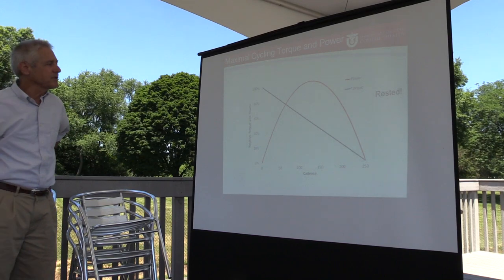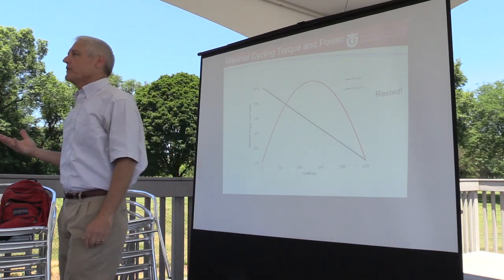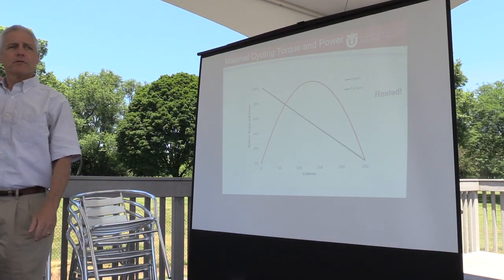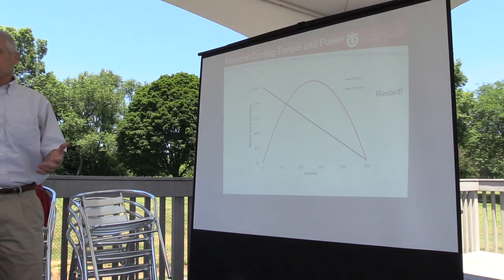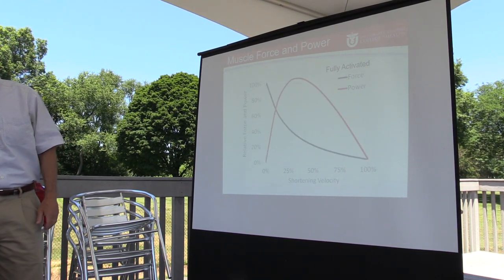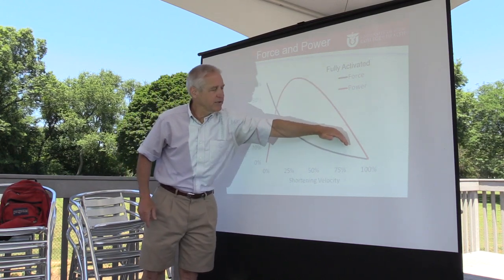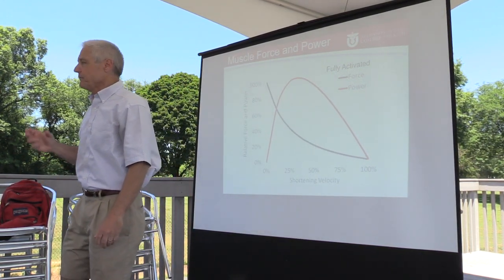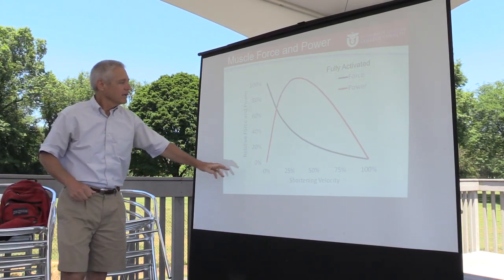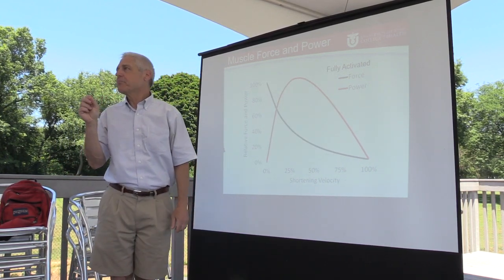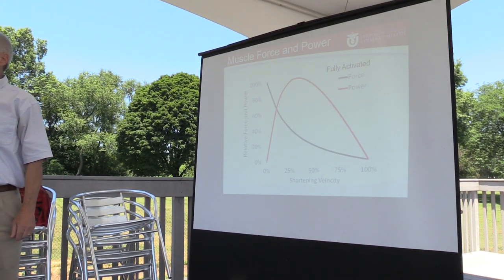Coming back to these shapes — torque decreases linearly and power has a peak. You'll recognize this from physiology: it looks like the force-velocity and power-velocity curve for muscle. If you take a rat gastrocnemius and stimulate it at different speeds, you get this same shape. And that's a big factor — but there's more to it when you do cycling, because your muscle cycles on and off, and that turns out to be really important.